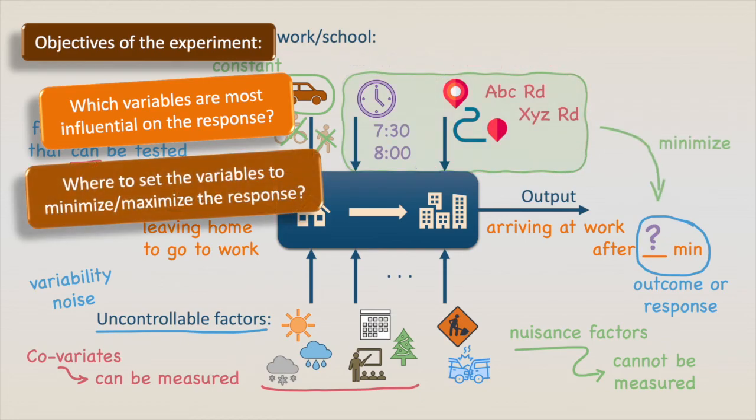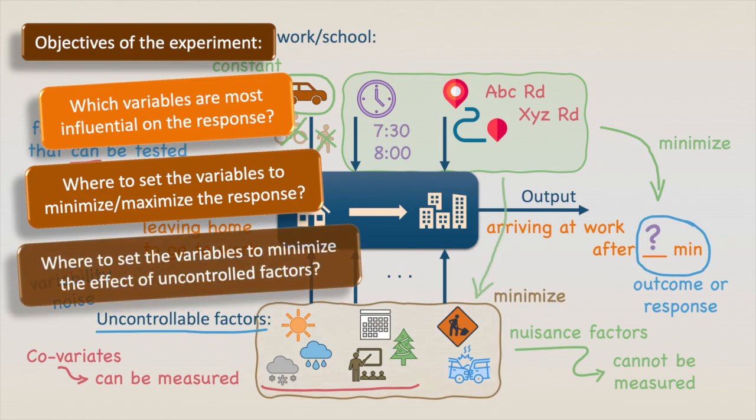Second, where to set the variables to minimize or maximize the response? Meaning in this case, at which time and which route should we take to minimize the commuting time? And finally, where to set the variables to minimize the effect of uncontrolled factors? Not only do we wish to minimize the commuting time, but we also would like to have the least possible variability in the commute time.